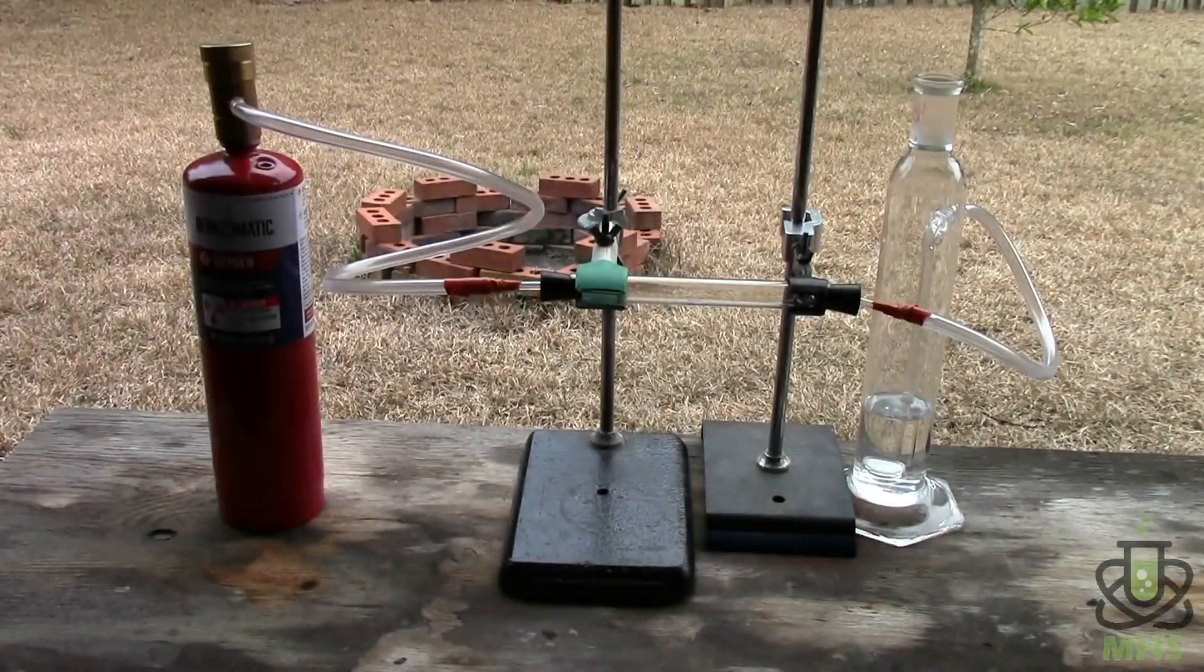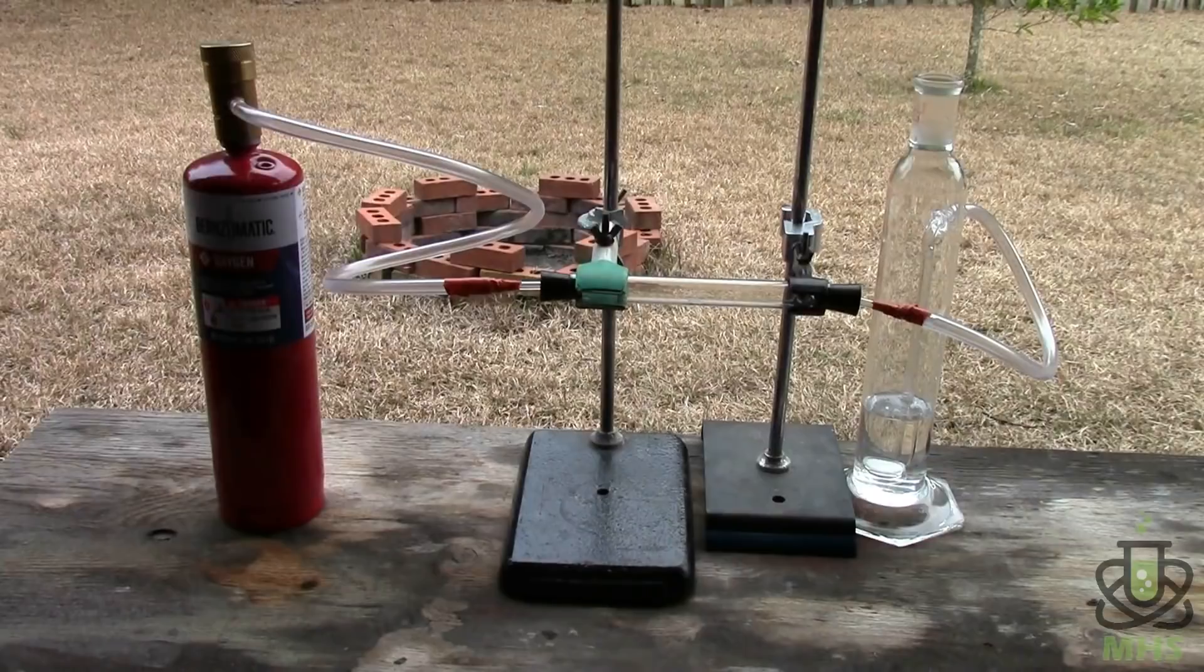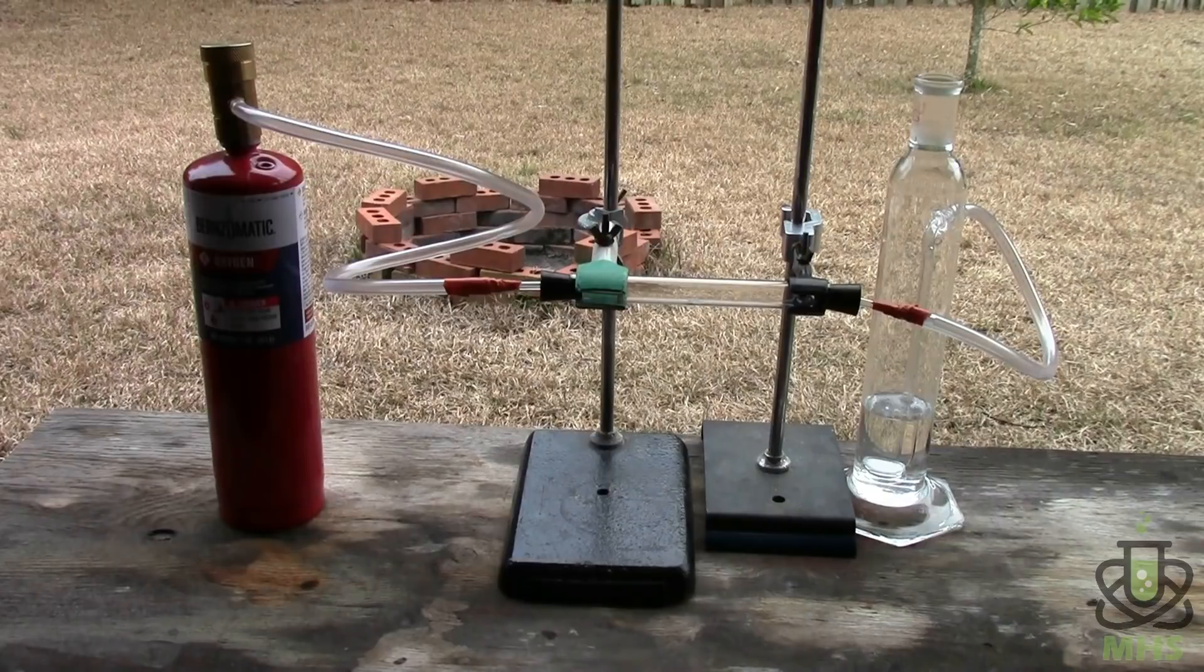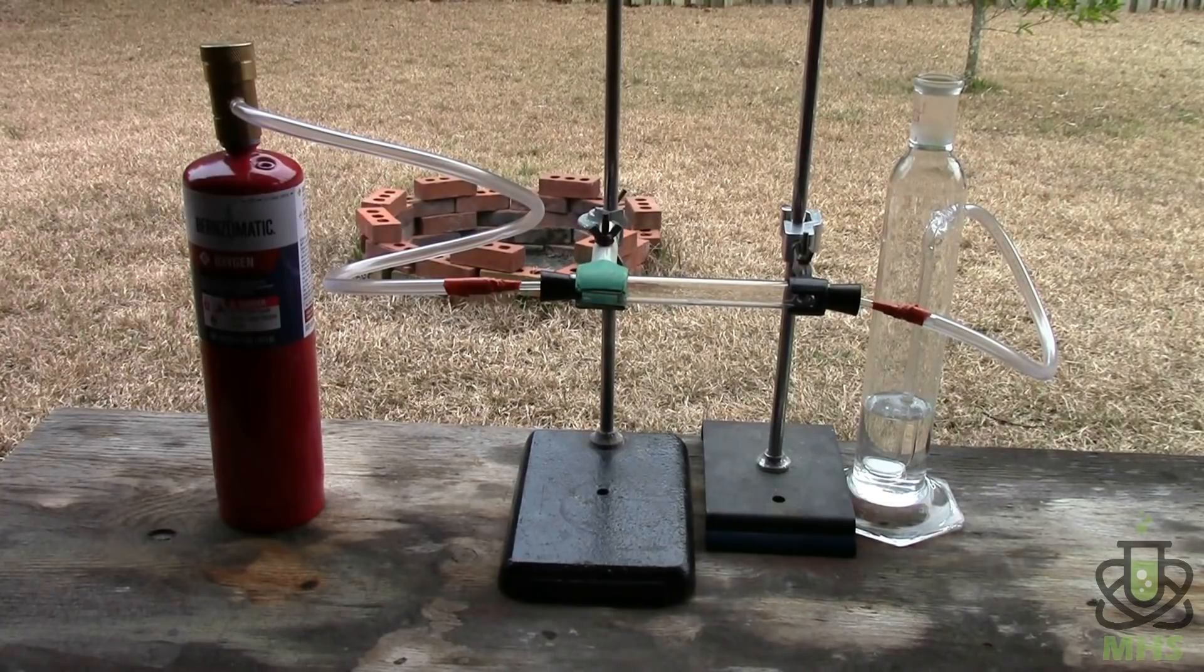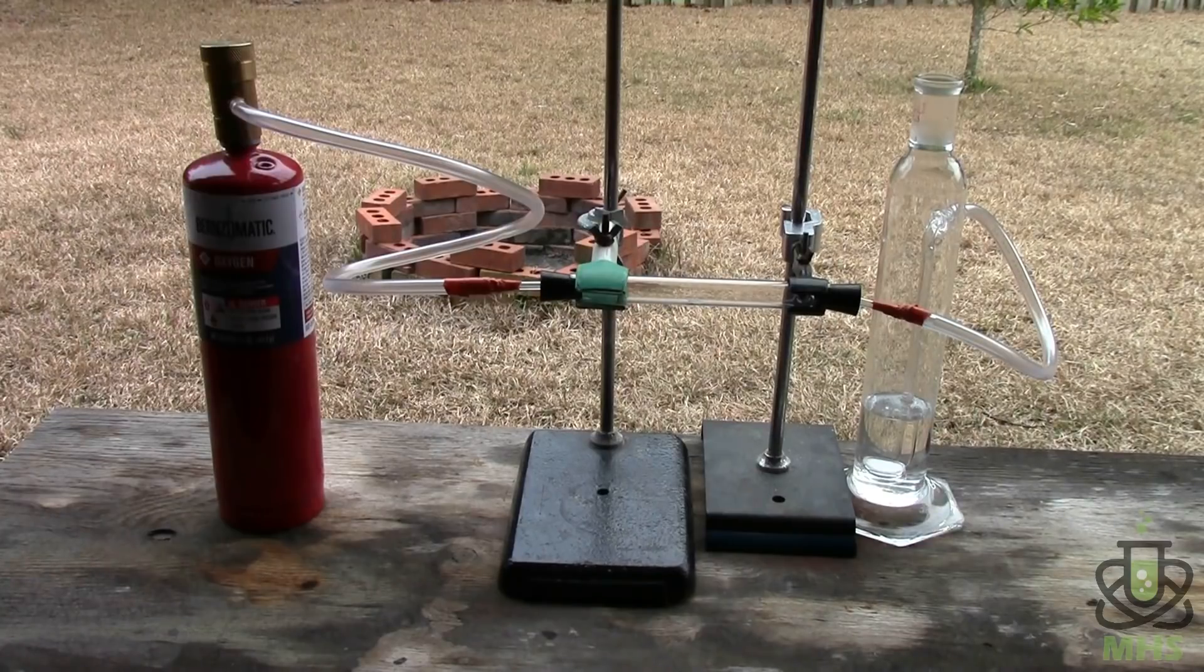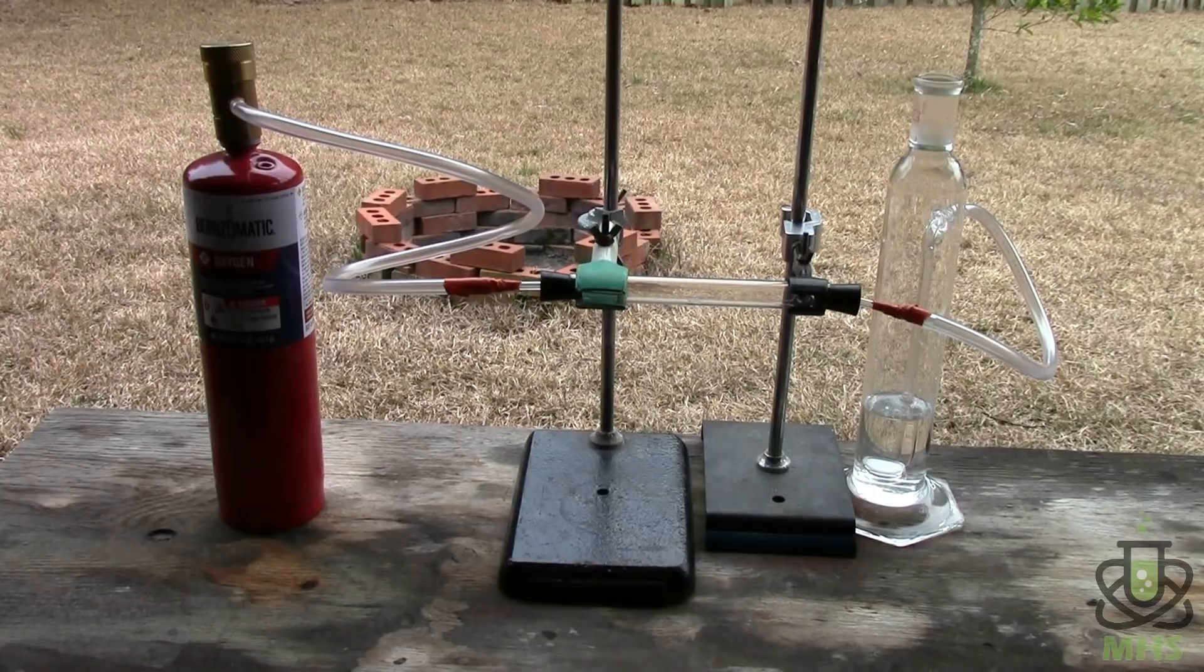So here's the assembled apparatus. You see on the left we've got the oxygen cylinder which leads via hose to a stopper in the left-hand side of my quartz tubing and the diamonds are inside that quartz tubing in the center. And then there's another stopper on the right-hand side which leads via hose to my gas wash bottle which is currently filled with 100 milliliters of lime water.